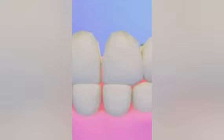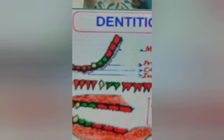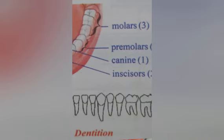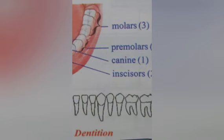The next topic is dentition. An adult human has 32 teeth. There are four types of teeth in human beings. First, incisors — eight — used for biting food into small pieces. Second, canines — four — for piercing or tearing the food. Third, premolars — eight — and molars — twelve — for grinding food materials. The dental formula is: 2/2, 1/1, 2/2, 3/3.